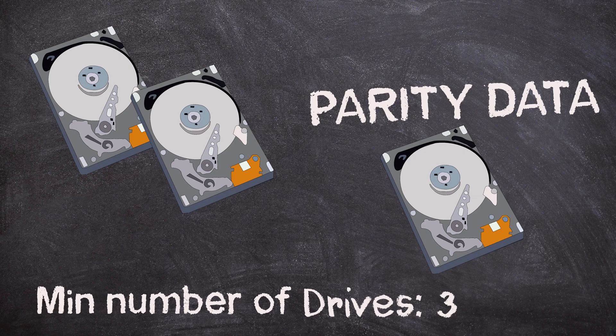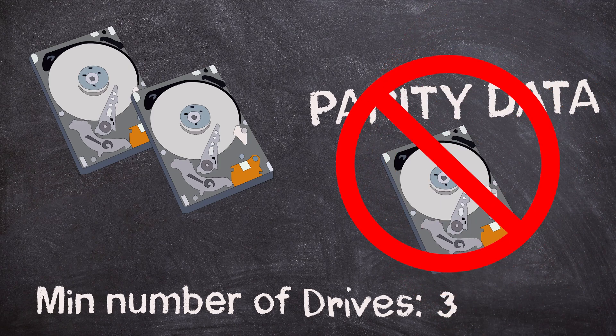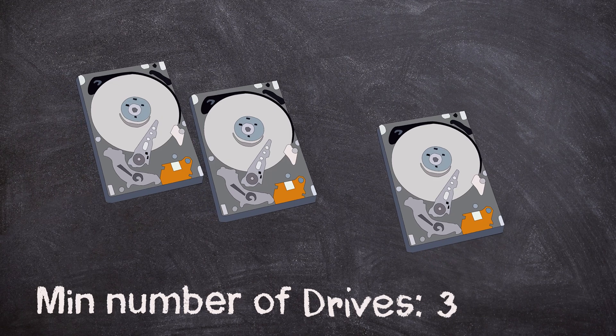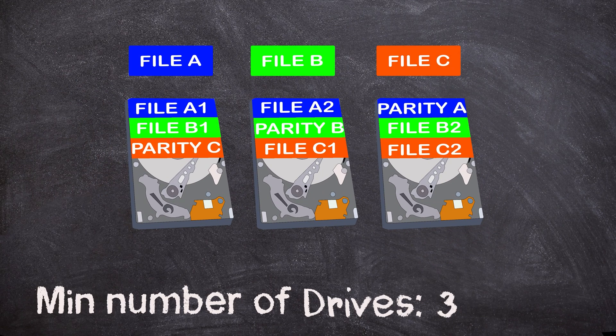RAID 5 is the most commonly used and is what outdated RAID 2, 3, and 4 — for good reason, because it offers better redundancy and better performance. Let's bring up a diagram so it's easier to understand. The only similarity RAID 5 has to RAID 4 is block-level striping. The biggest difference — and a huge advantage — is that the parity data is no longer stored on a single drive, which was normally the bottleneck. Instead, the parity data is itself striped across all the drives.